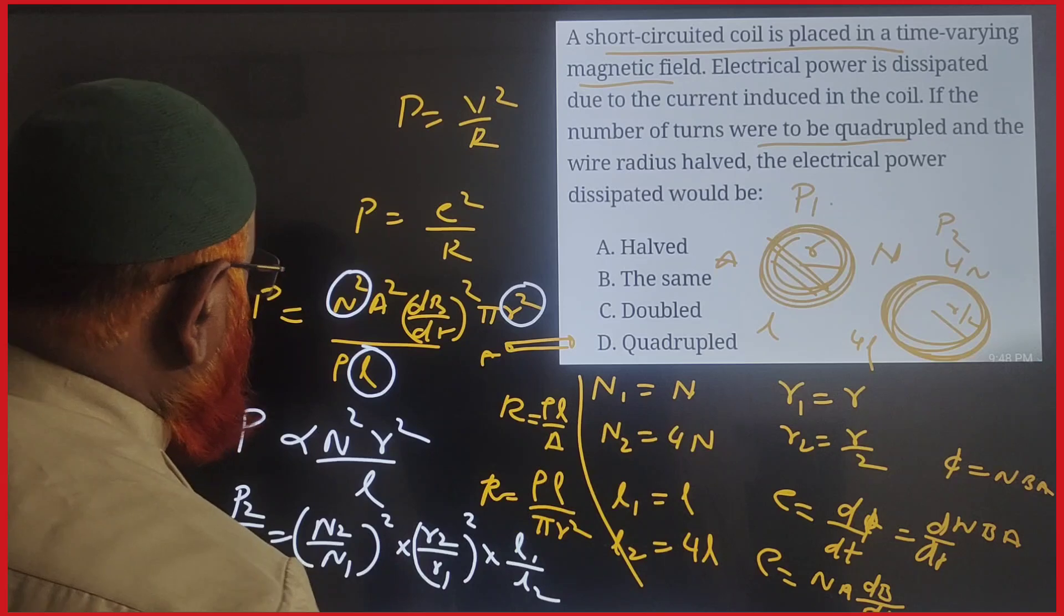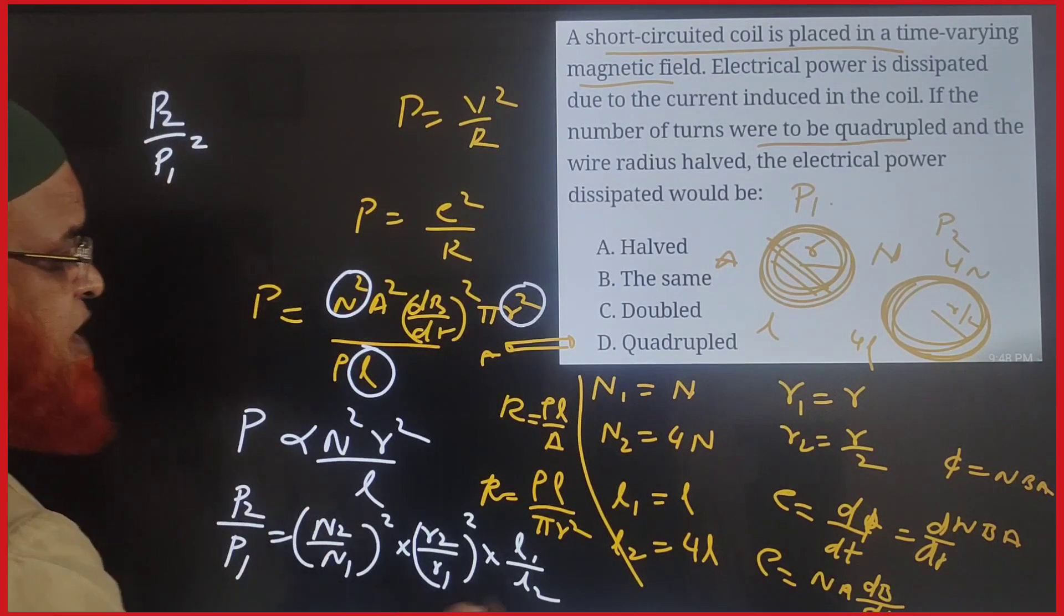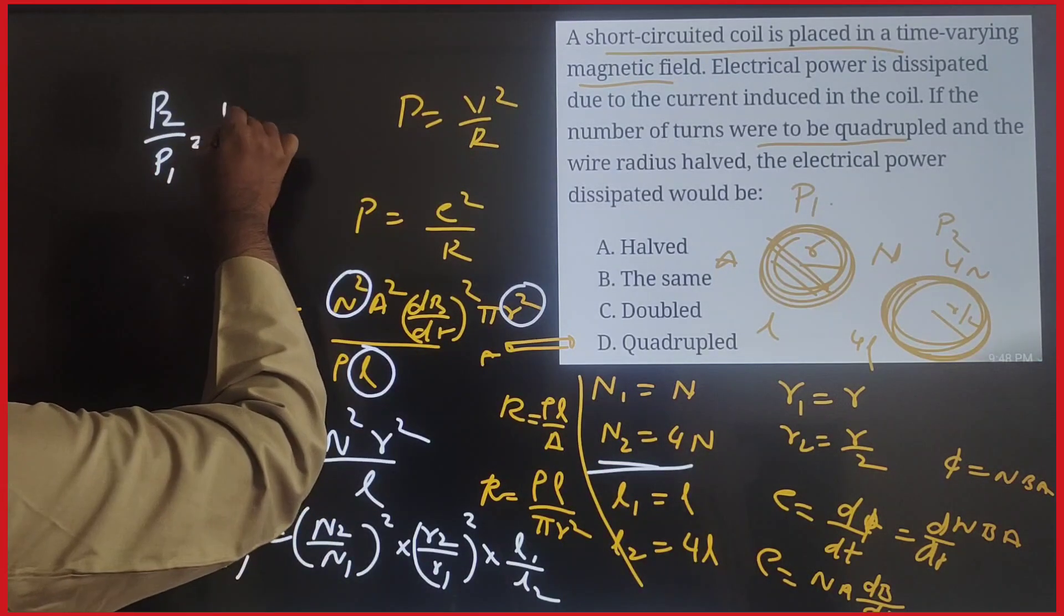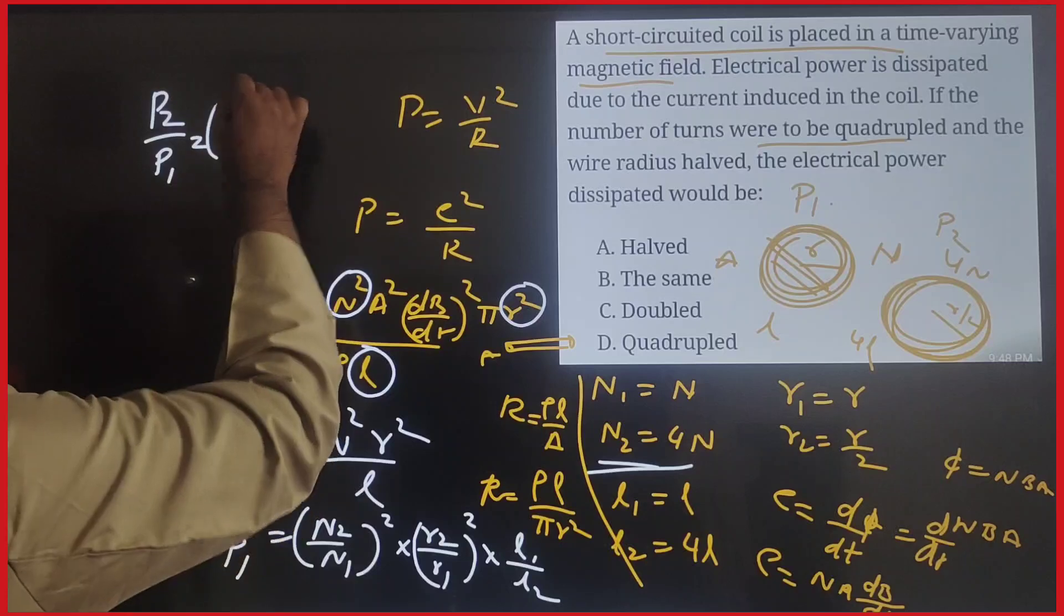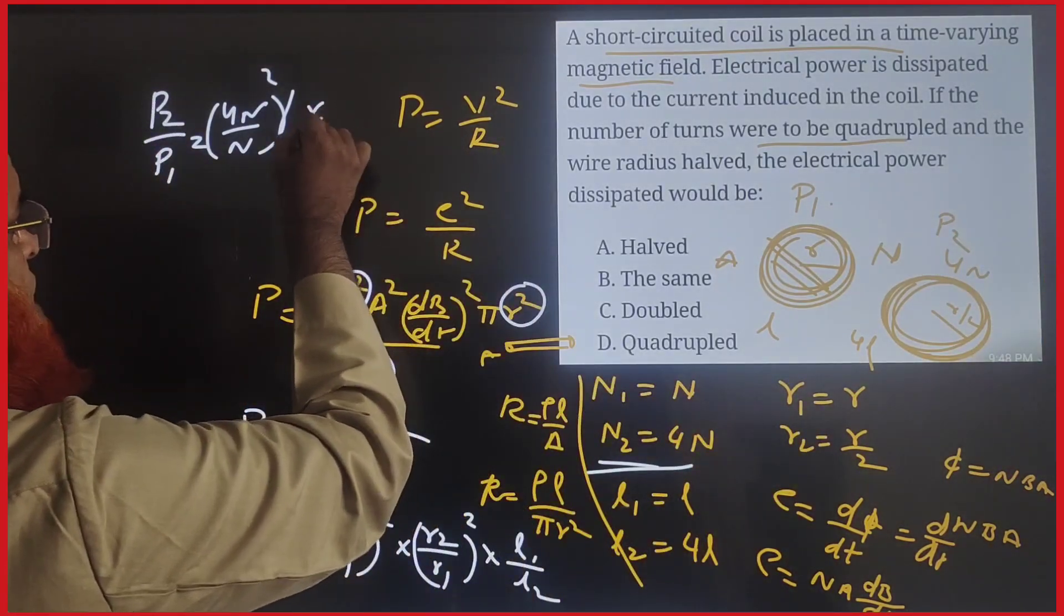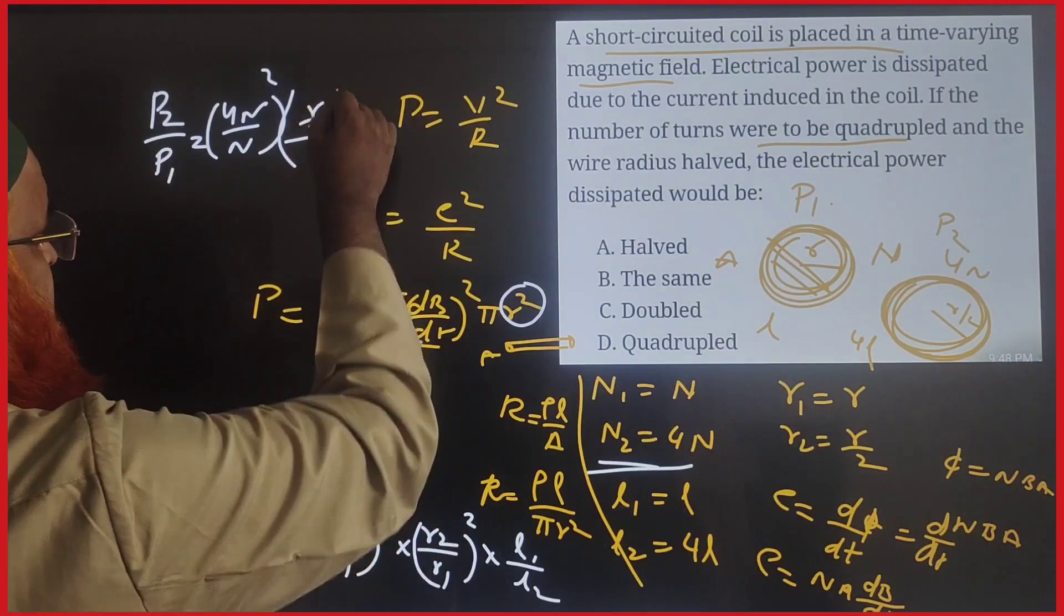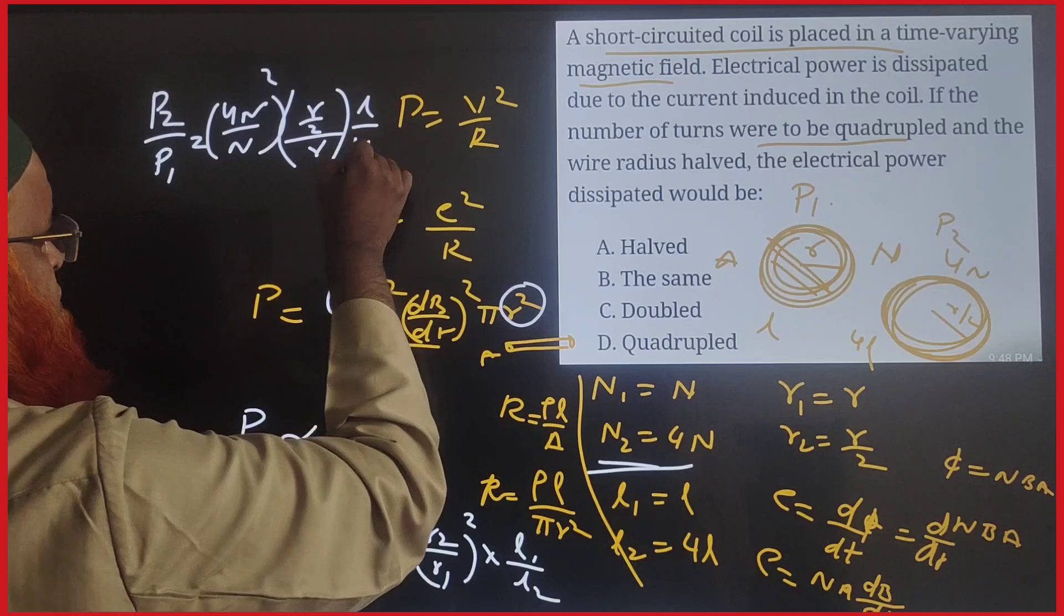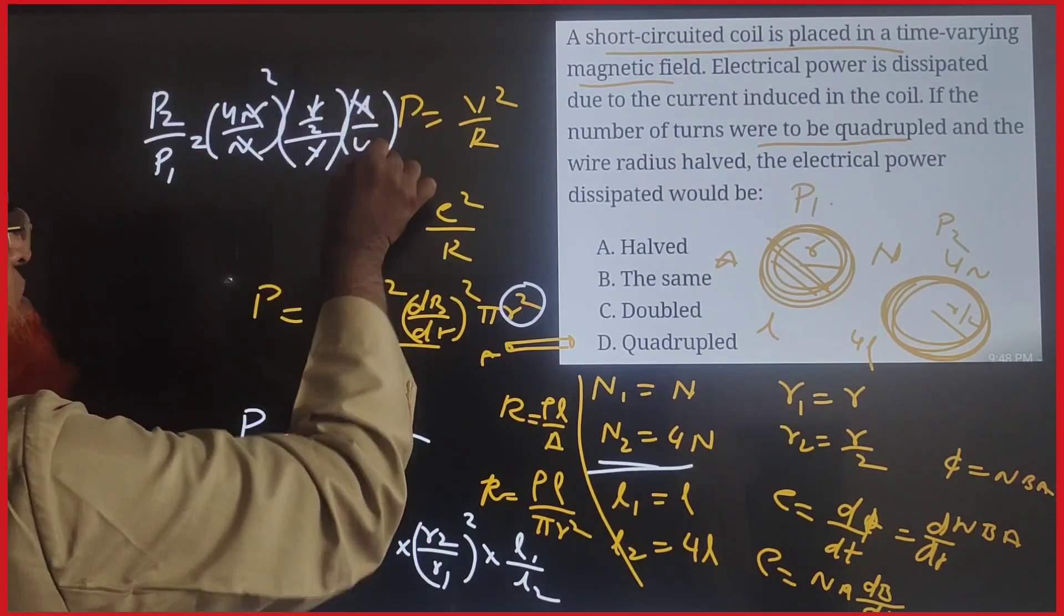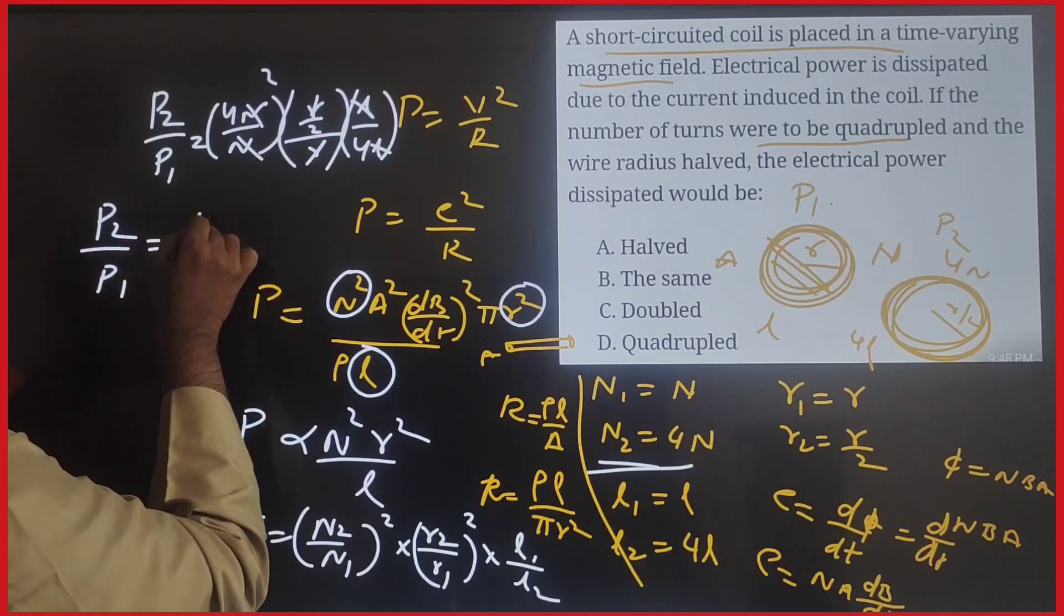Now substitute the values and get the relation. Therefore P₂/P₁ = (4n/n)² × (r/2 / r)² × (l/4l). We can cancel out the n's and r's and l's. Therefore P₂/P₁ = 16 × 1/4 × 1/4. Four fours are sixteen in the numerator, and sixteen in the denominator.